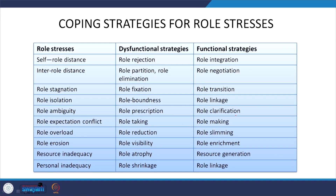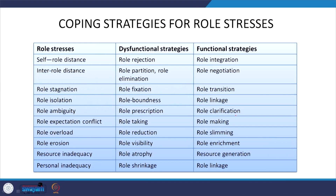For role overload, the dysfunctional strategy is role reduction while the functional strategy is role slimming — a positive approach. Role erosion is addressed through role visibility (dysfunctional) and role enrichment (functional): adding value to a role so it becomes clear and important to others. Resource inadequacy leads to role atrophy (dysfunctional) — the functional strategy is resource generation, developing resources so the role becomes important and acceptable.